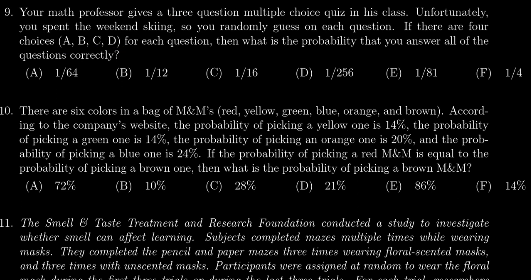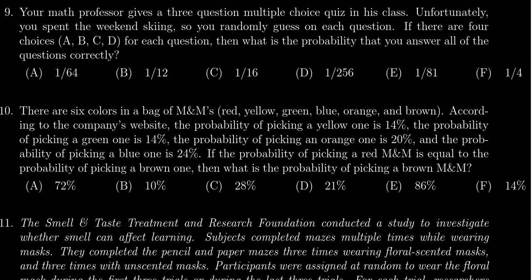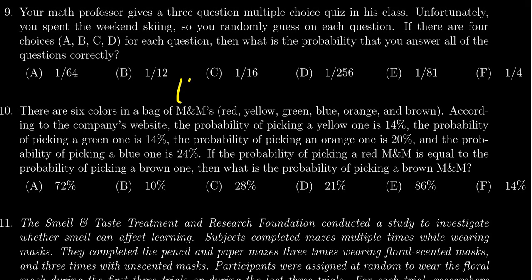The probability of getting the first question right is going to be one fourth, because you have four options and if they're all equally likely, you're going to get one out of four by guessing. The second question also has four options, so you get one fourth. For the third question, you also get one fourth. That's the probability of guessing each one right.